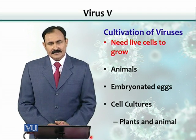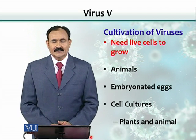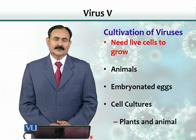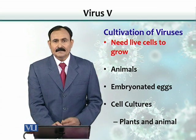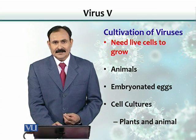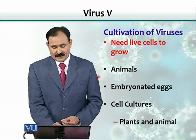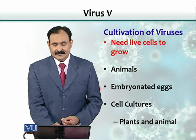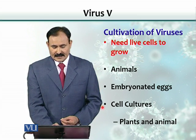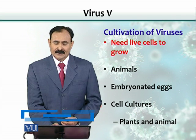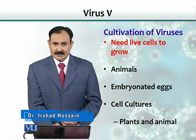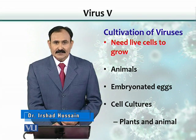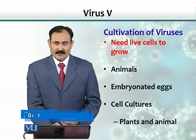That is the reason that they need cells to grow. The cells are available in the animals, embryonated eggs, and cell cultures. These are the three sources on which the virus can grow or can be grown.